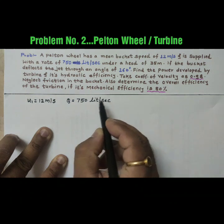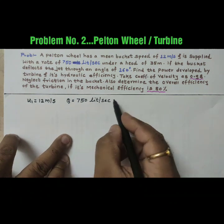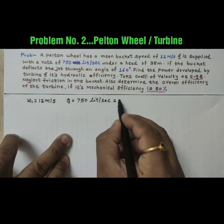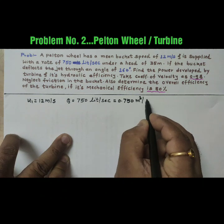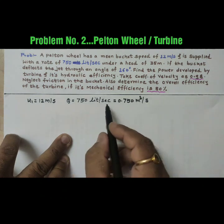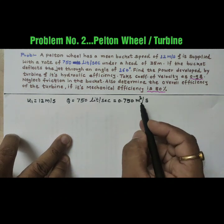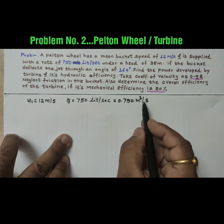But we will convert this liter per second into meter cube per second, so it is 0.750 meter cube per second. As one meter cube is equal to thousand liter, so we will get Q is equal to 0.750 meter cube per second.